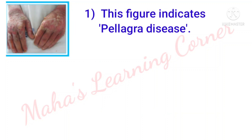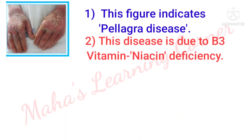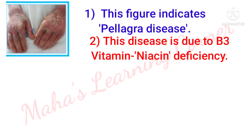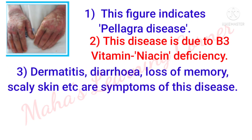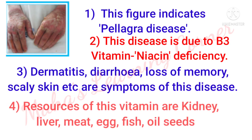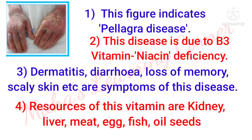This figure indicates pellagra disease. This disease is due to B3 vitamin deficiency, that is niacin deficiency. Symptoms: dermatitis, diarrhea, loss of memory, scaly skin, etc. Resources of this vitamin are kidney, liver, meat, egg, fish, oil seeds.